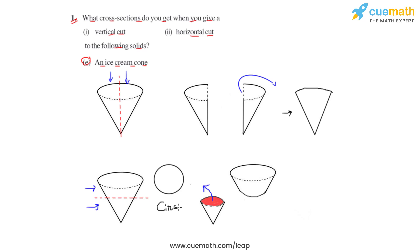These are the different ways through which we can cut different solids vertically and horizontally and observe the cross sections. This is how we can answer the first question of this exercise.